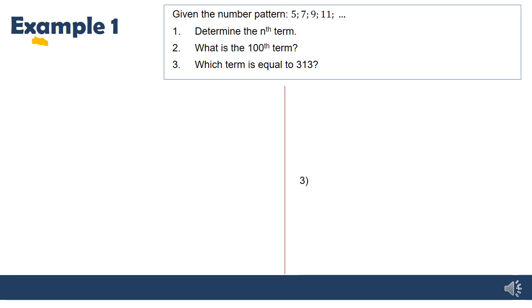Let's start with an example similar to what you've done in previous years. We're given the number pattern 5, 7, 9, 11, but they don't tell us it's linear, so we have to figure out what type of pattern it is. The first question asks us to determine the nth term, which can also be called the general rule, general term, or formula.